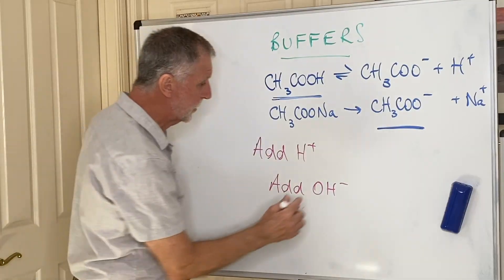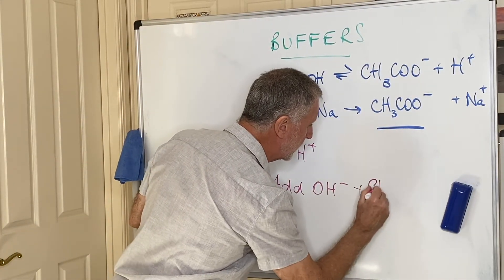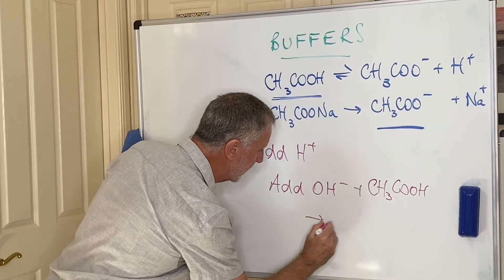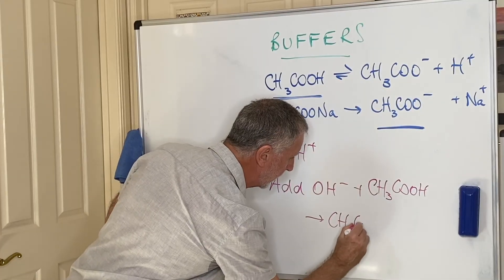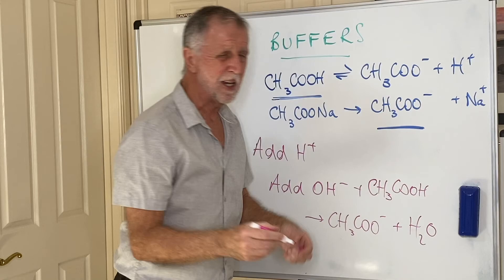Alternatively, you can react those directly with the CH3COOH, and this will produce CH3COO- and H2O, which is exactly the same thing. We're turning that molecule into that ion, and we're turning the H-plus into H2O.